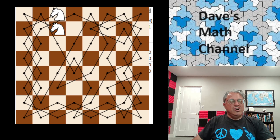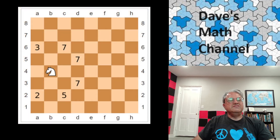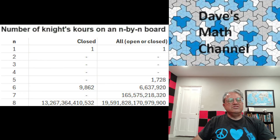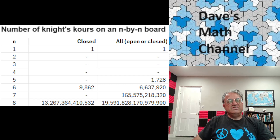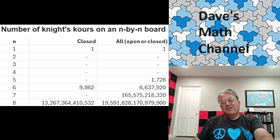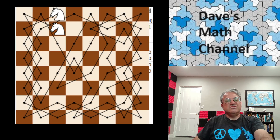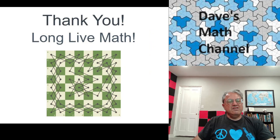If you wanted to find all of them, I don't know how people found these numbers in this table — these huge numbers. They must have had to do backtracking, and probably used a supercomputer or ran things for a really long time, or maybe parallel processing. I don't know how they were able to find all 19 quadrillion possible knight's tours on an 8×8 board — that kind of boggles my mind. I think 8×8 is the largest board size for which this is known, since these numbers are so big. Anyway, that completes my talk for today on knight's tours. I hope you enjoyed it. Thank you for watching. Long live math, and I'll see you next time.